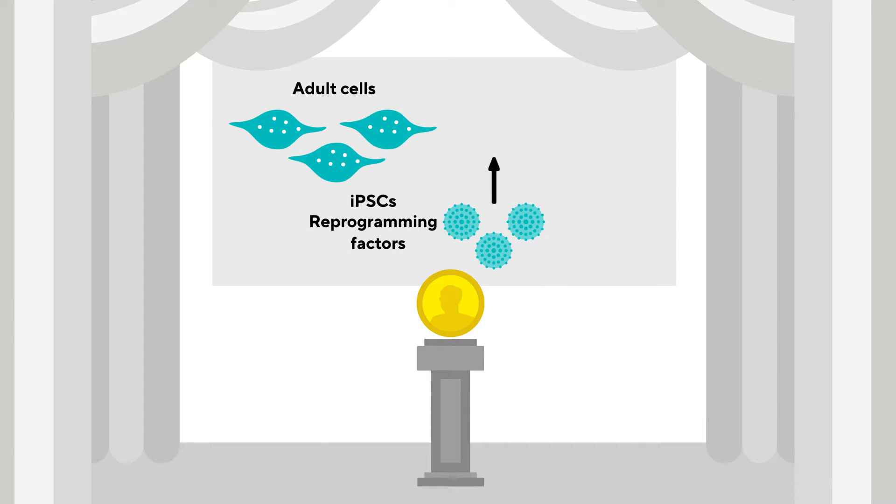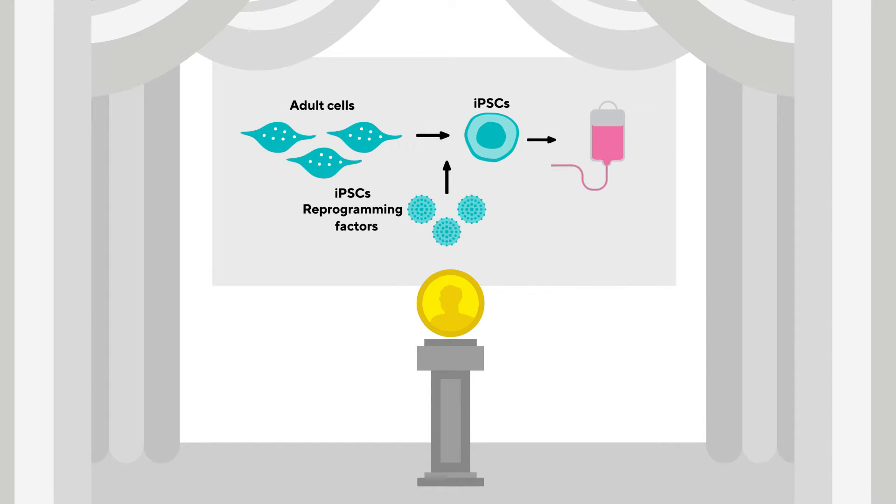In 2012, the Nobel Prize for Physiology or Medicine was awarded for the discovery that adult somatic cells can be reverted to a pluripotent stem cell state using reprogramming factors.